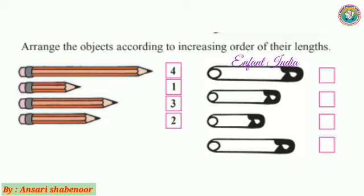You have numbers given here - see, number one, two, three, four. Like this we have to solve all of them. So first you have some safety pins. The shortest one among the pins, we have to give number one.